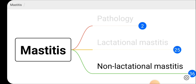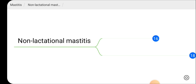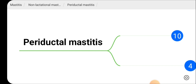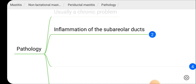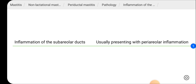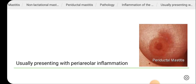Next, let's go through non-lactational mastitis. There are two main clinical entities: periductal mastitis and granulomatous mastitis. Periductal mastitis is usually a chronic problem. There is inflammation of the subareolar ducts — the ducts beneath the areola become inflamed — and because of that, patients usually present with periareolar inflammation, which is inflammation around the areola.